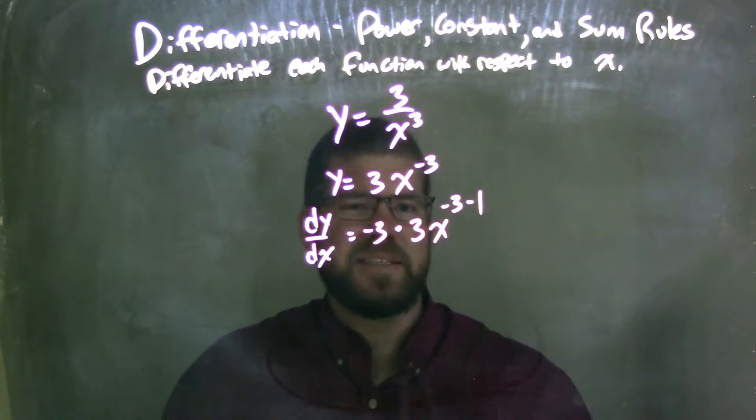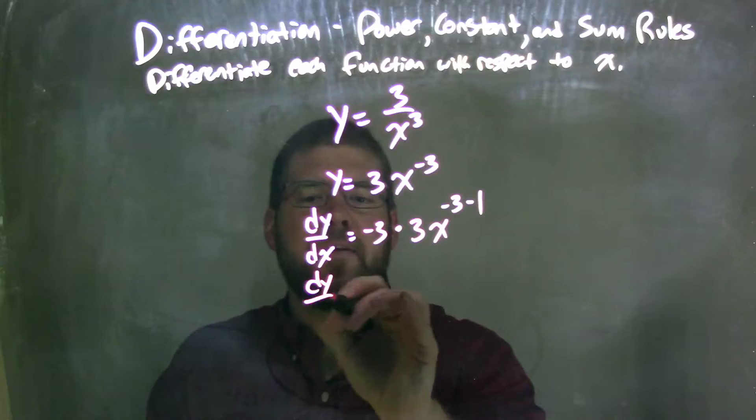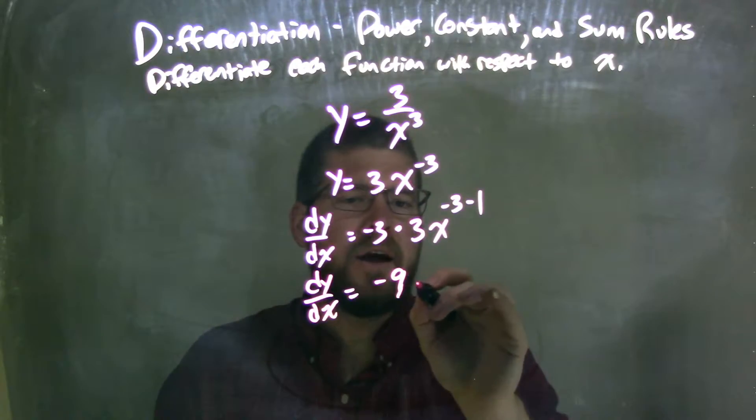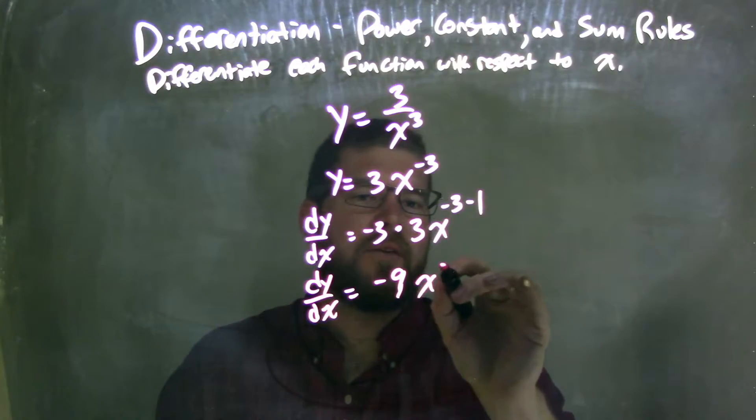So now we can simplify, all right? We can simplify this. So dy/dx is equal to negative 3 times 3, which is negative 9. Negative 9x to the negative 3 minus 1 is negative 4 power.